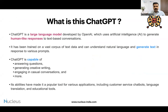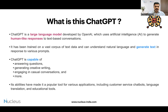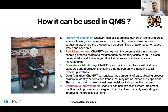So what is ChatGPT? It's a large language model developed by OpenAI. It uses artificial intelligence and generates human-like responses. This particular AI language model has been trained with different sets of text data and it will generate text. ChatGPT is capable of answering questions, generating creative writing, engaging in casual conversation, and a lot more. So let's understand how it can be used in your quality management system.